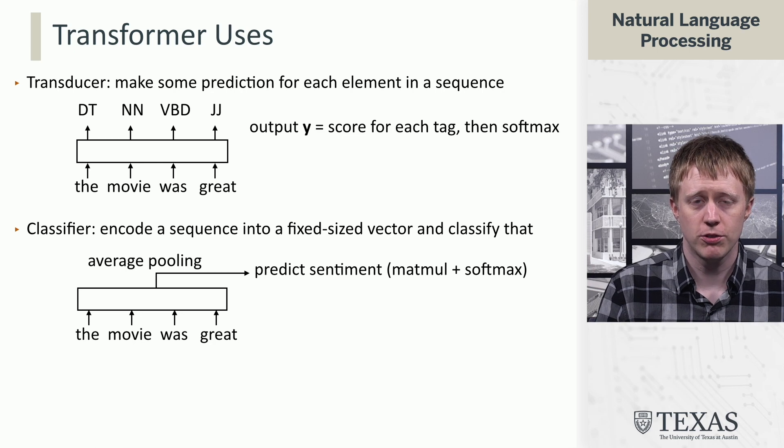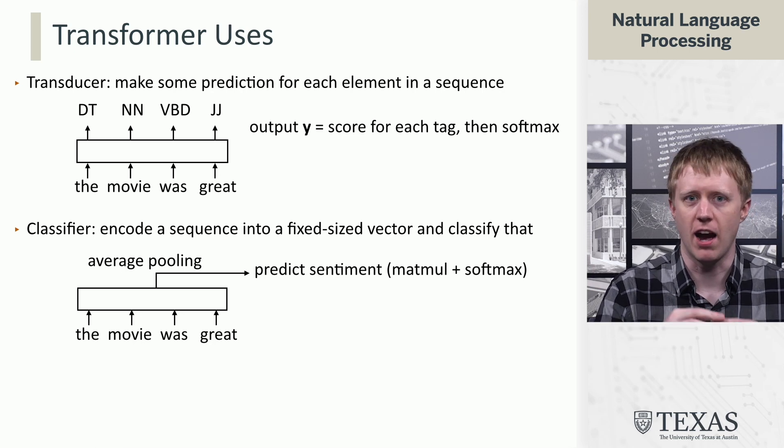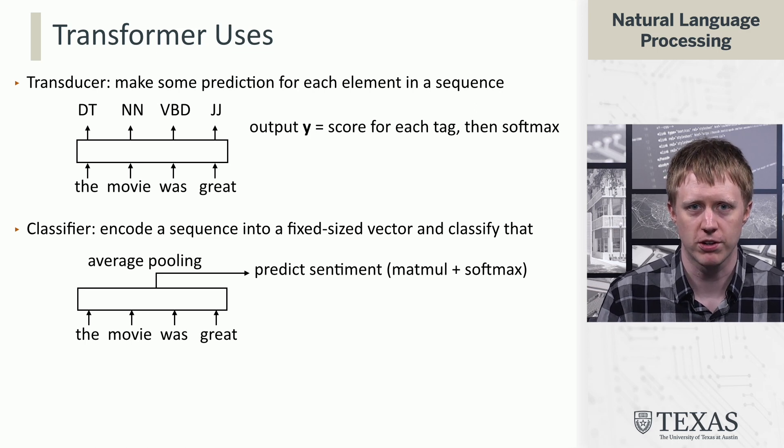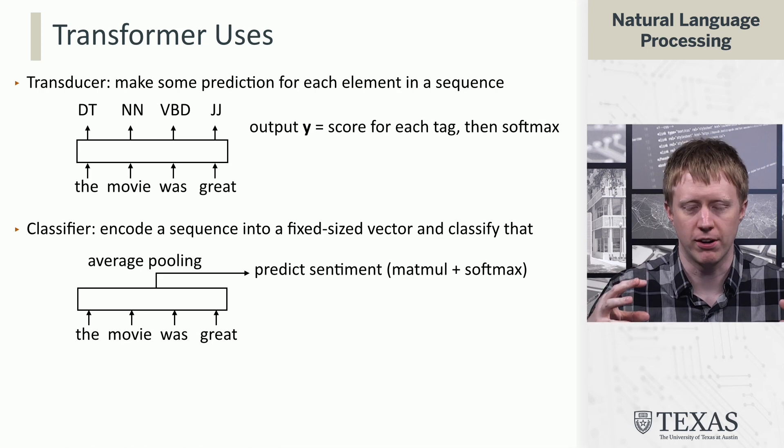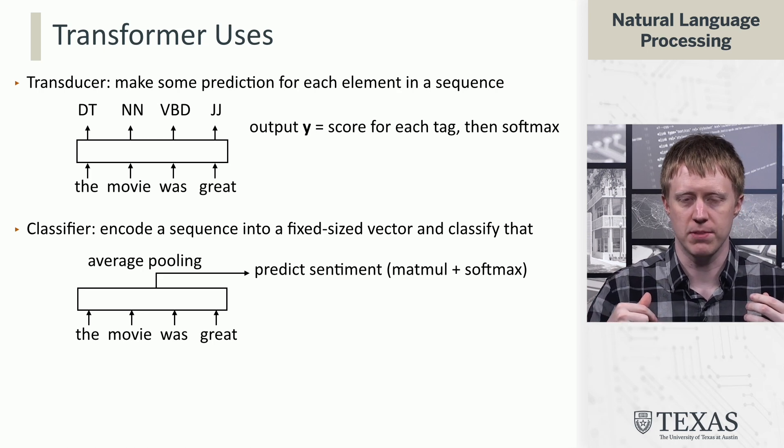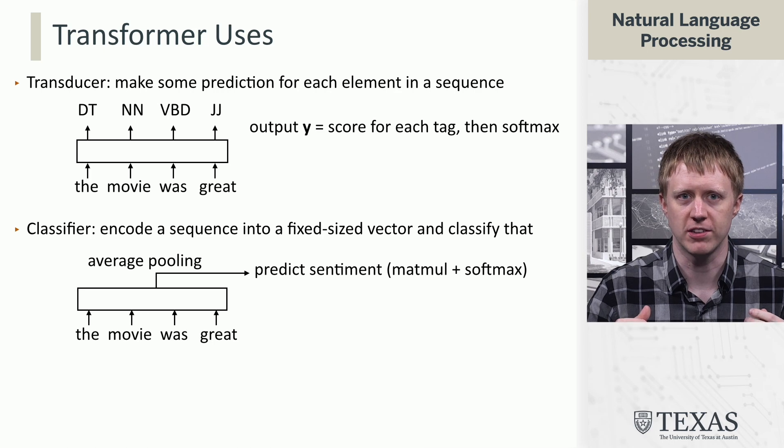We can also make a classification decision over an entire sequence at once. Just like deep averaging networks allowed us to take a bunch of words, average them together, and make a prediction, we can do the exact same thing just with a transformer in the mix as well.